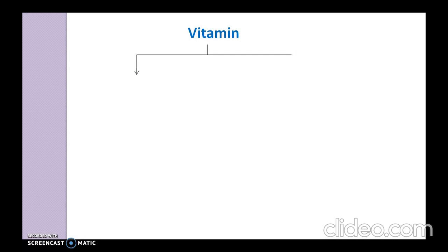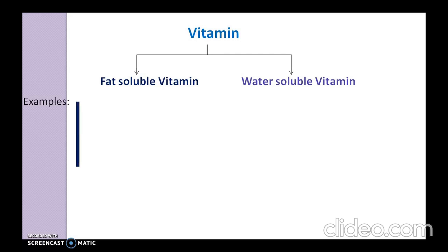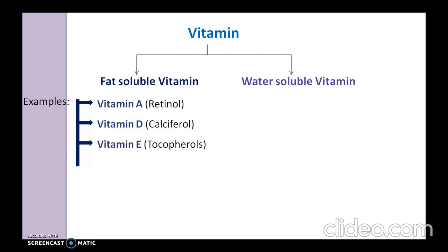Vitamins are classified mainly into two classes. The first one is fat soluble vitamins and the second one is water soluble vitamins. Fat soluble vitamins are vitamin A, known as retinol; vitamin D, known as calciferol; vitamin E, known as tocopherol; and vitamin K, known as phylloquinones.